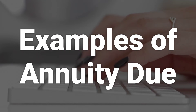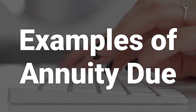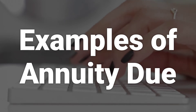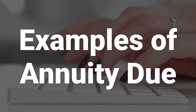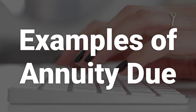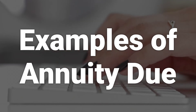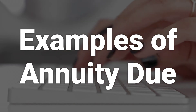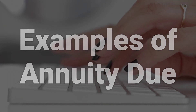Monthly bills, such as rent, car payments, and insurance expenses are examples of annuities due because the beneficiary must pay at the beginning of the billing period. There are also annuity due scenarios related to saving for retirement or putting money aside for a specific purpose.